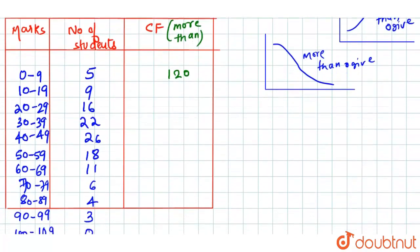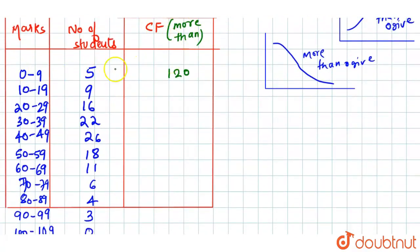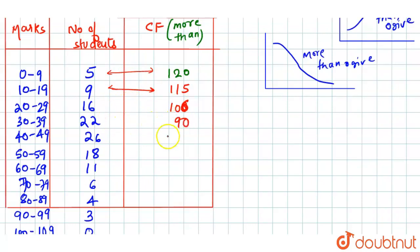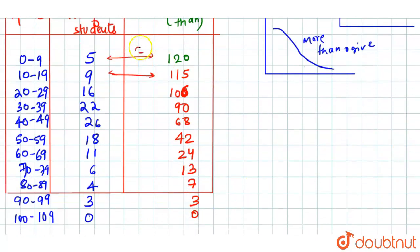To find the more-than cumulative frequency, we subtract the corresponding frequencies sequentially: 120 minus 5 gives 115; 115 minus 9 gives 106; 106 minus 16 gives 90; 90 minus 22 gives 68; 68 minus 26 gives 42; 42 minus 18 gives 24; 24 minus 11 gives 13; 13 minus 6 gives 7; 7 minus 4 gives 3; 3 minus 3 gives 0.